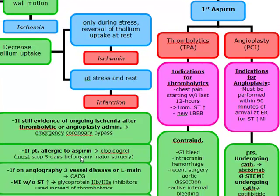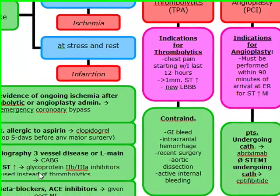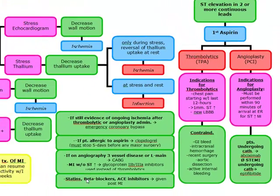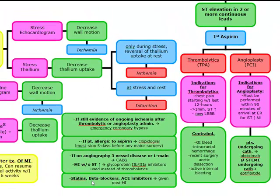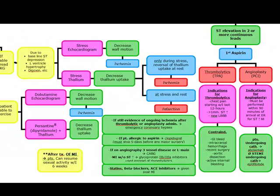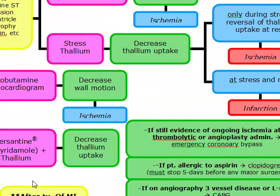If a patient is allergic to aspirin, give clopidogrel — but stop it five days before any major surgery. On angiography, if there's three-vessel disease or left main disease, do CABG. If there's an MI without ST elevation, use glycoprotein 2B3A inhibitors instead of thrombolytics. Post-MI, you must give statins, beta blockers, and ACE inhibitors. After treatment of an MI, patients can resume sexual activity within six weeks.